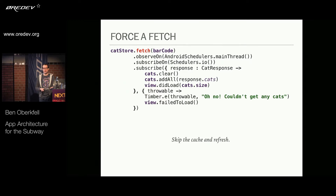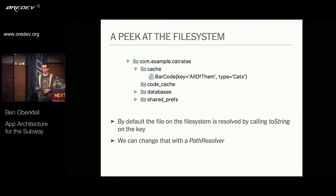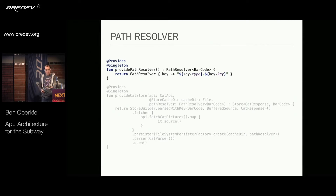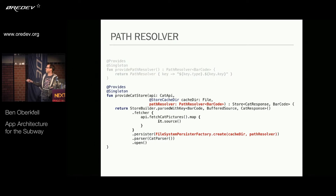Looking at the underlying file system in Android Studio's Device Explorer, by default data is stored in a file named with the Java toString of your barcode. You can change that with something we call a path resolver. If you want a fancier file system structure, you define a path resolver — for instance, barcode type dot key, like cat_pictures.all_cats. You pass the path resolver into the persister using a slightly different interface called the FileSystemPersister factory, and it uses that path resolver to figure out what file to use on the file system.